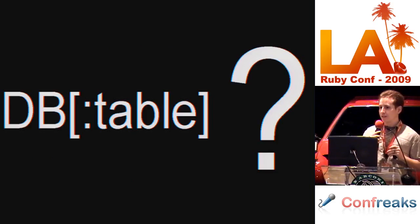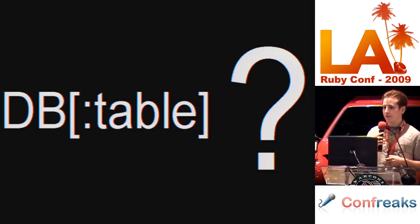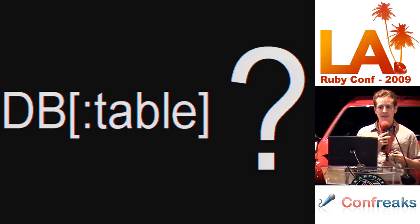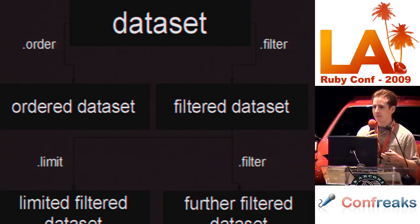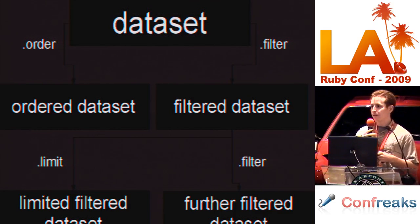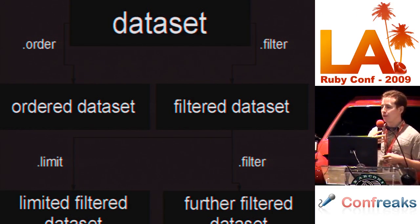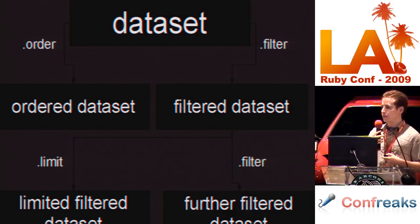I've gotten a bit ahead of myself. First, I need to explain the interesting creature you see on the screen: the Sequel dataset. It's what gives Sequel a lot of its flexibility. A dataset represents an SQL query, or more generally, an abstract set of objects. At any point you can take that abstract set and turn it into a complete set by calling all. Datasets are usually created by calling the array access operator on the database object with a symbol. If you call filter on a dataset to restrict the rows it represents, it returns a new dataset with the filter applied — the original dataset won't change. If you call limit on that copy, it returns another copy with both limit and filter applied. This is known as a functional-style API, where objects return modified copies of themselves. This allows you to share datasets with multiple threads without worrying that those threads will modify shared state.